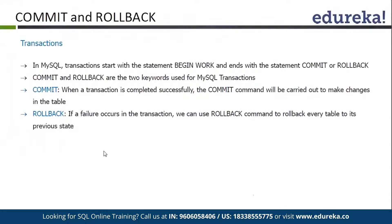Transactions basically begin with BEGIN and end with COMMIT or ROLLBACK. Either we commit our transactions, or if there is an issue, we rollback. COMMIT means if the transaction is completed successfully, the commit command makes the changes permanent. ROLLBACK means if there is an issue in any of the transaction actions, everything will be rolled back.